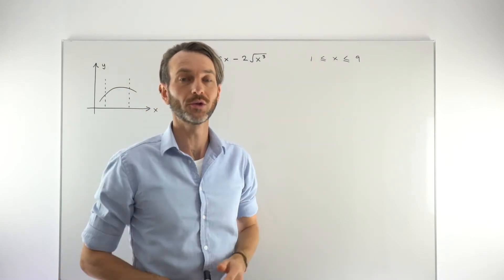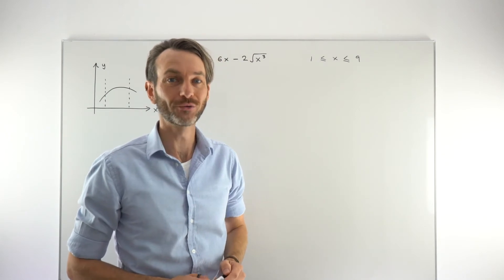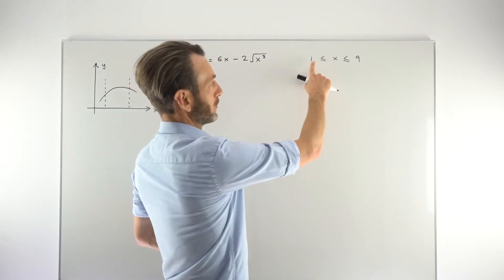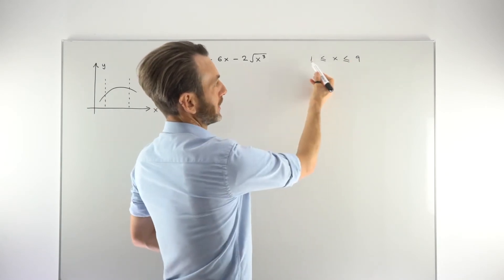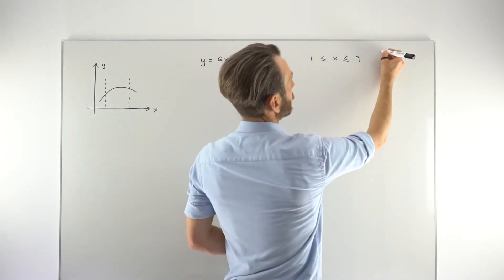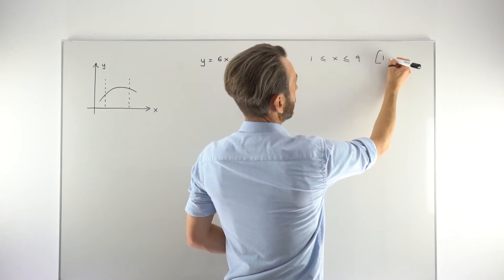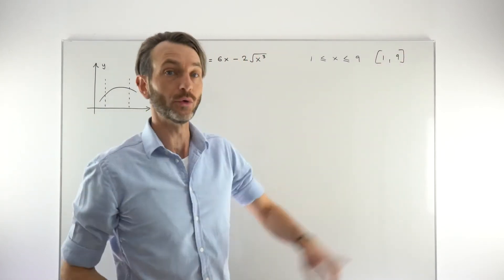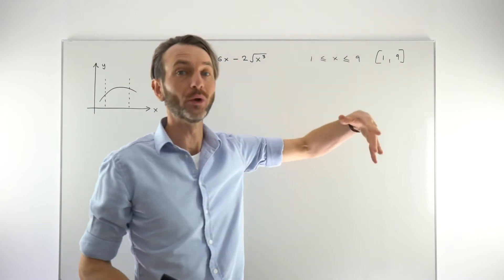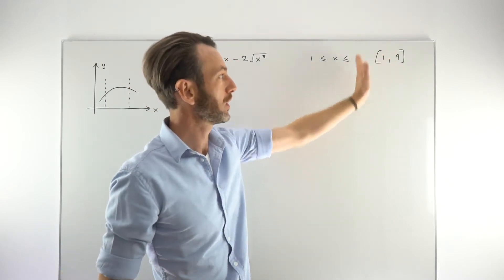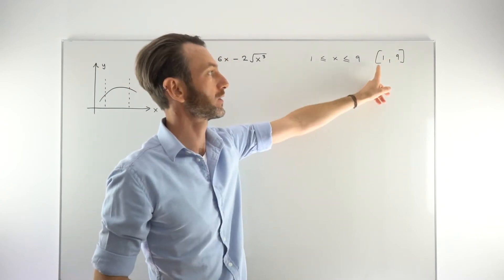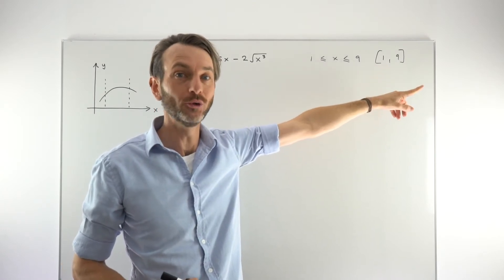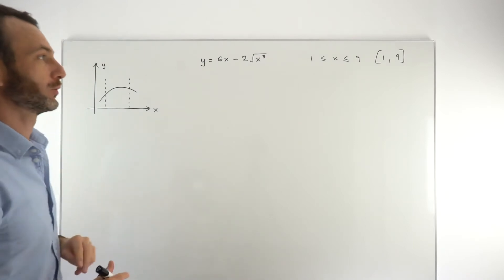The opposite of a closed interval is an open interval, which does not include the endpoints but includes all the values between 1 and 9. We represent a closed interval like this, or you'll also see it written using square brackets. That tells you you're dealing with all the x values between 1 and 9, including 1 and 9. If it's written with round brackets, that's an open interval — between 1 and 9 but not including those endpoints.